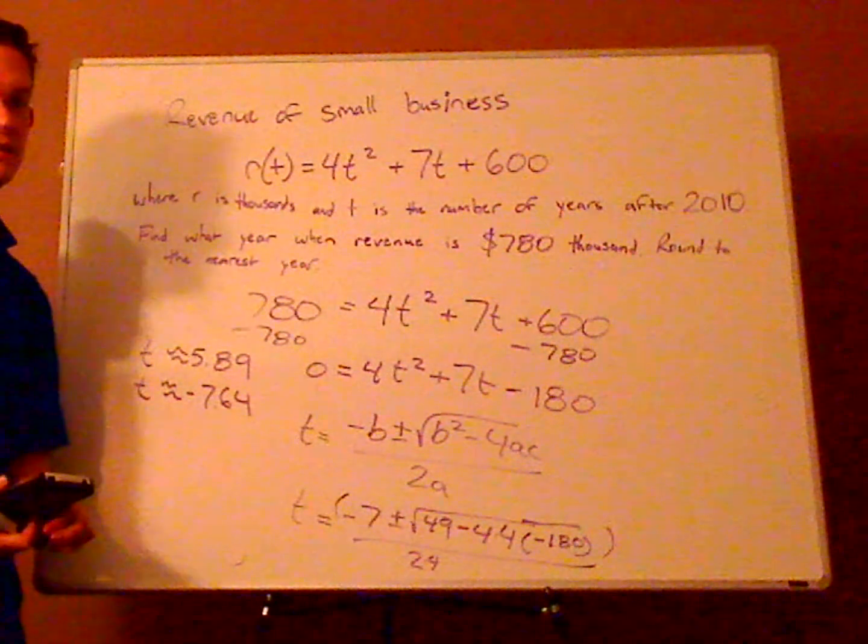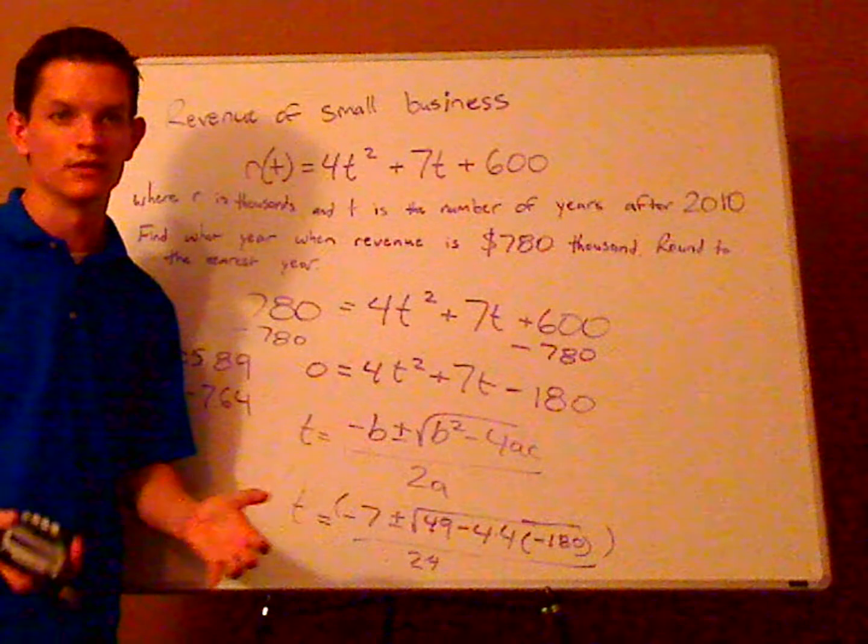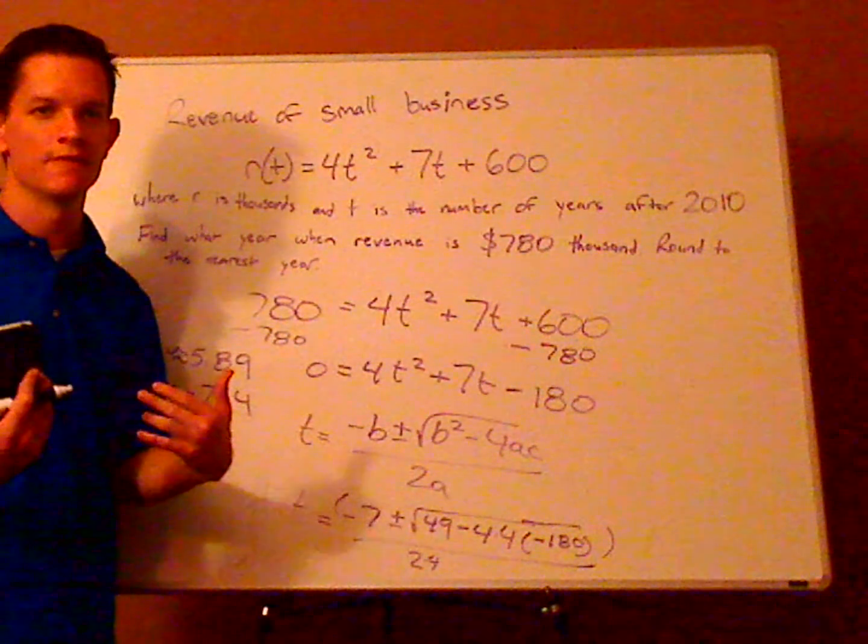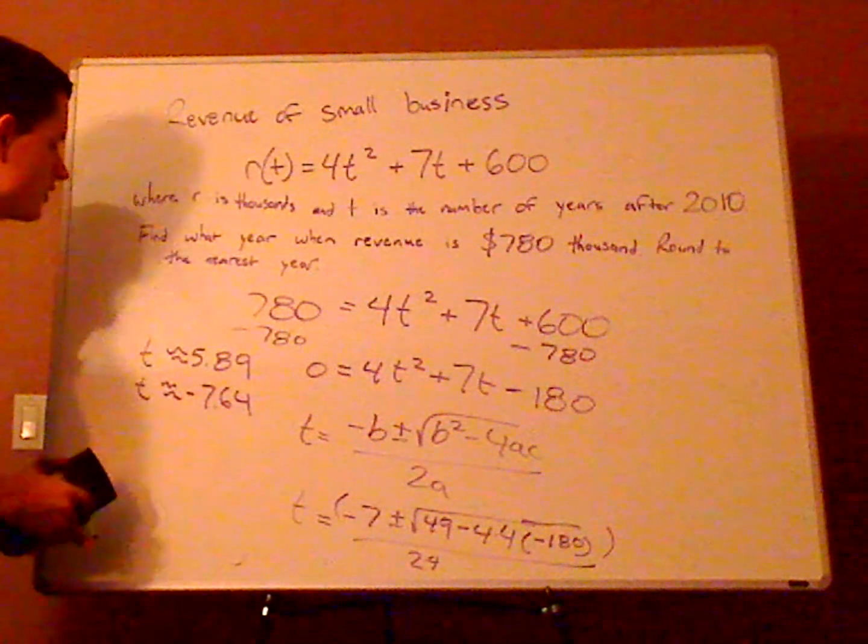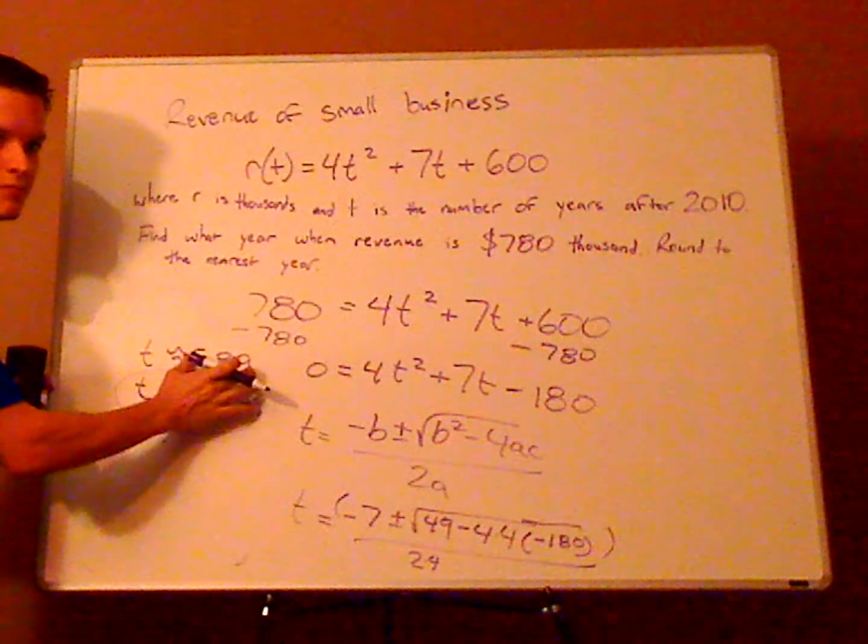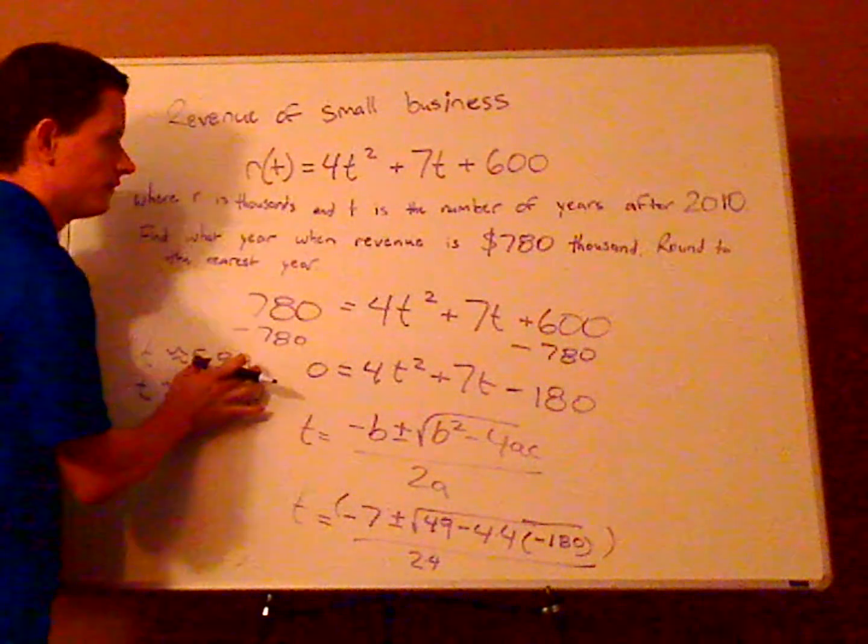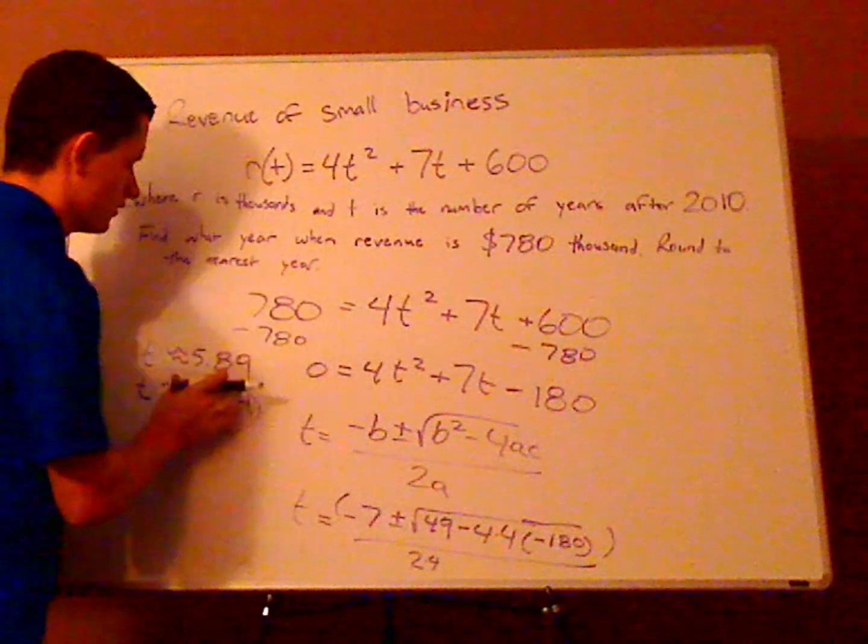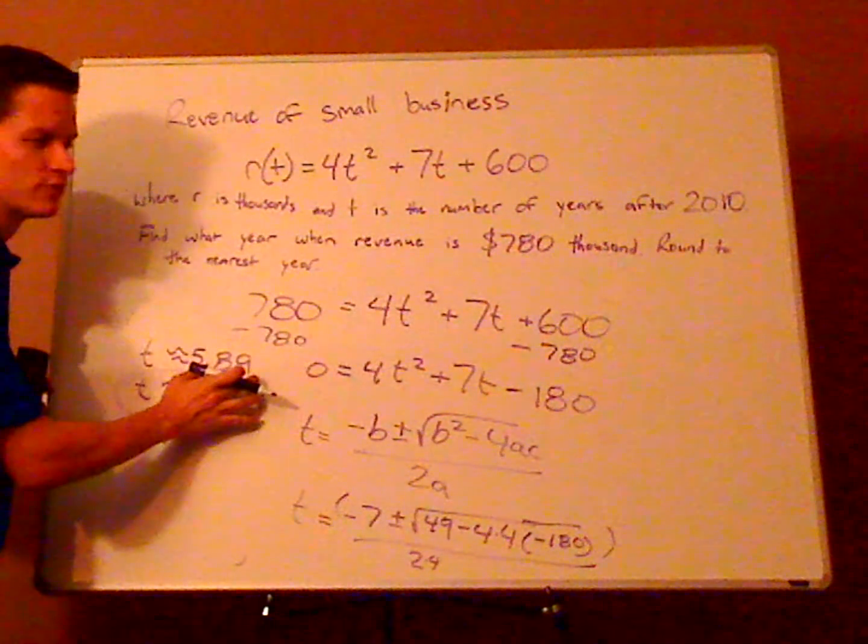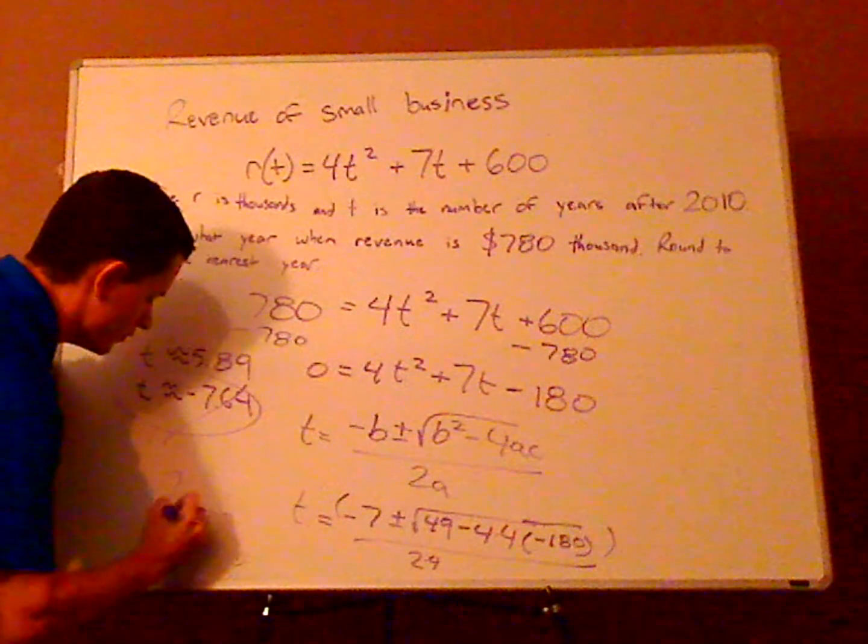Now, let me ask you this question. Can your time be negative? Unless you have a time machine, right, you're going back in time. Well, you're going to reject the negative answer. You're going to accept the positive answer. And this is the number of years after 2010. So rounding, you round up, so that would be 6. Six plus 2010 would be 2016.